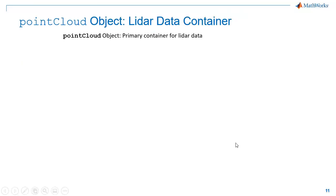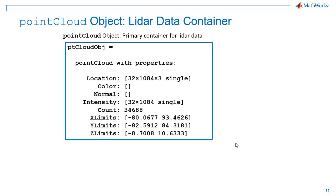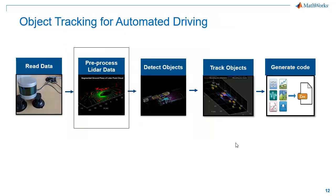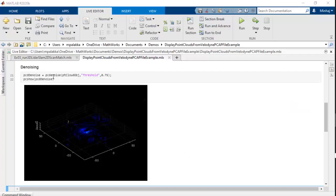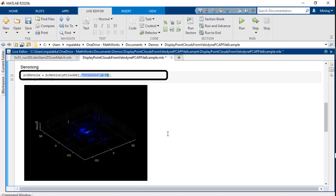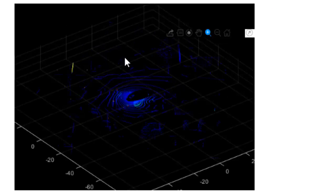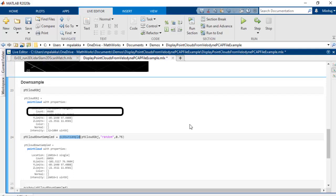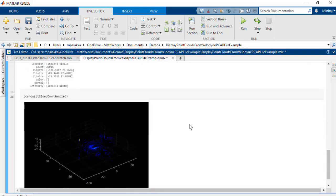In MATLAB, point cloud data is stored as a point cloud object. It encloses all the properties associated with the point cloud such as location, intensity, color, count, XYZ limit, etc. On this point cloud, you can find nearest neighbors, find points in any specific region of interest, remove invalid points, and select any points using indices. Now that we have our point cloud data, we can start to do some basic preprocessing. You can use the PC Denoise function to denoise the point cloud based on a threshold value you define. And you can use PC Downsample to downsample the point cloud without compromising the structure. As seen here, the number of points in the point cloud have reduced from 34,000 to 26,000 while the structure still remains the same.